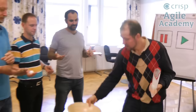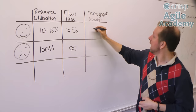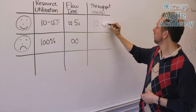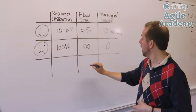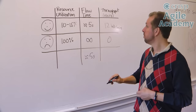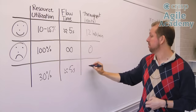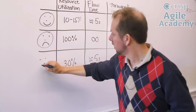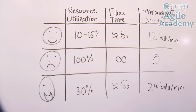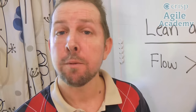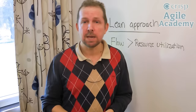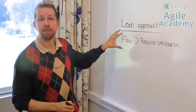If we add another column here — throughput, some would call it velocity — we had about 12 or so balls per minute in the first round, zero in the second round, and in the third round with pull, we had about the same flow-through time but improved resource utilization to maybe 30%, giving us about 24 balls per minute. We optimize flow first, then optimize resource utilization without sacrificing flow. That's the lean approach. A lot of organizations get stuck because they focus way too much on resource utilization — keeping people busy. The lean approach is: focus on flow primarily, and then resource utilization secondary. One way to do that is through pull.